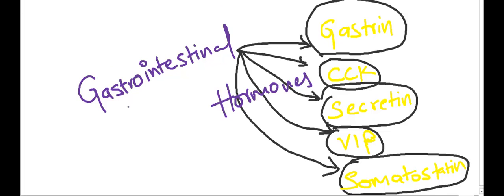Today I am going to discuss a little bit about gastrointestinal hormones, which consist of gastrin, cholecystokinin, secretin, vasoactive intestinal peptide which is also called neuropeptide, and somatostatin.